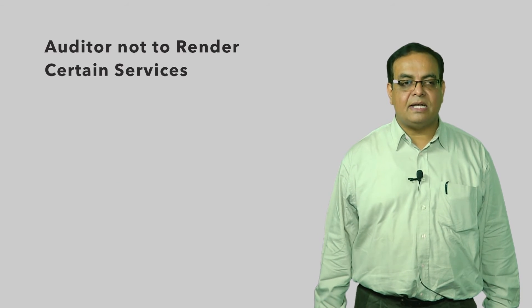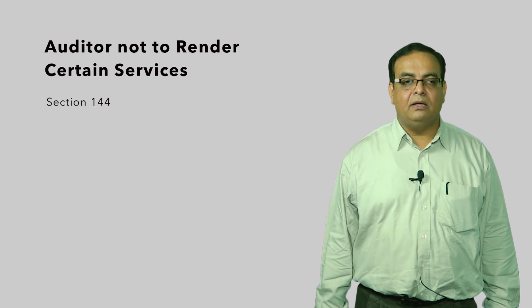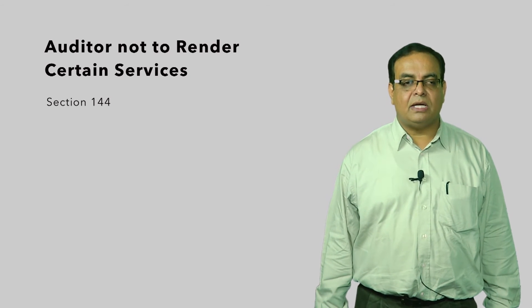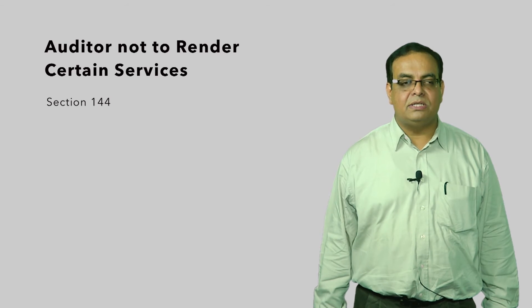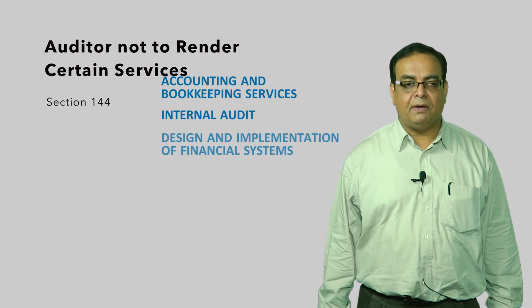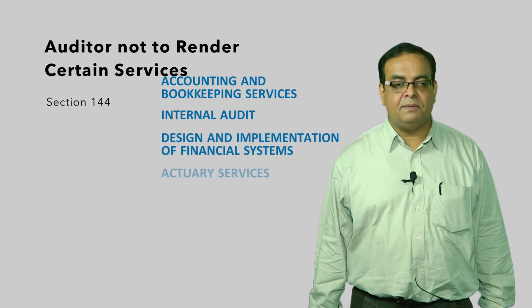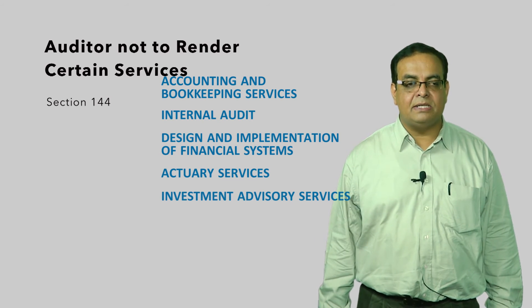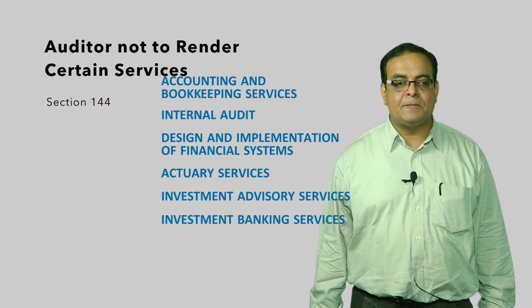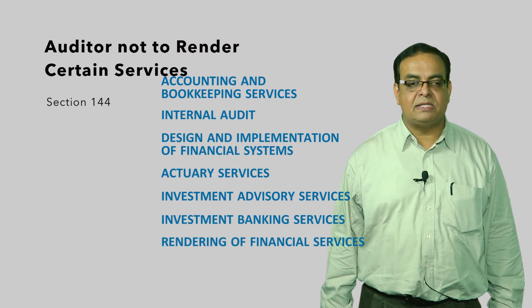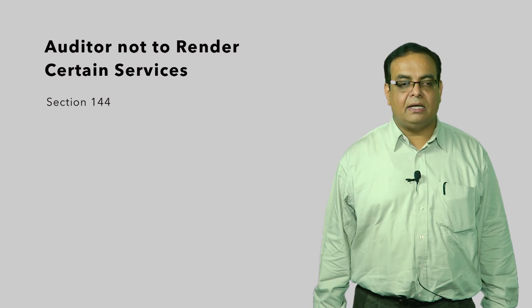Section 144 says that an auditor appointed under this act shall not provide certain services to the company being audited. The prohibited services include accounting and bookkeeping services, internal audit, design and implementation of any financial information system, actuarial services, investment and advisory services, investment banking services, rendering of outsourced financial services, management services, and any other kind of services as may be prescribed.